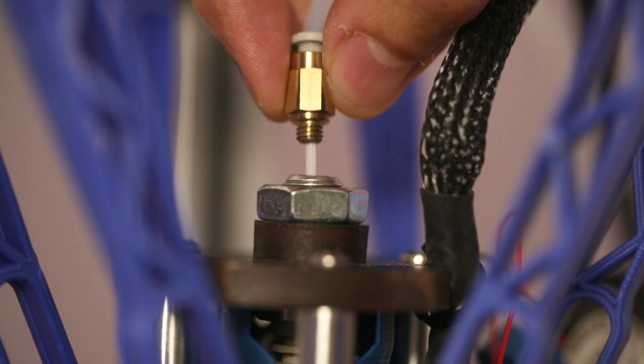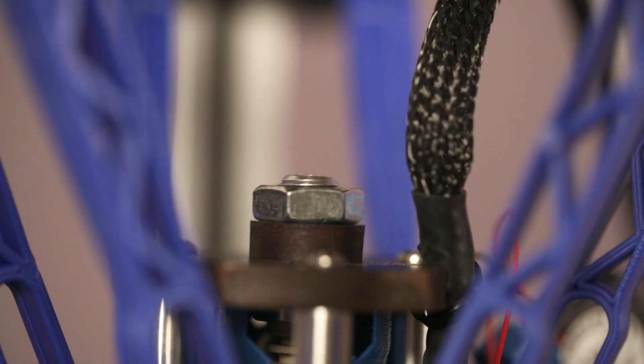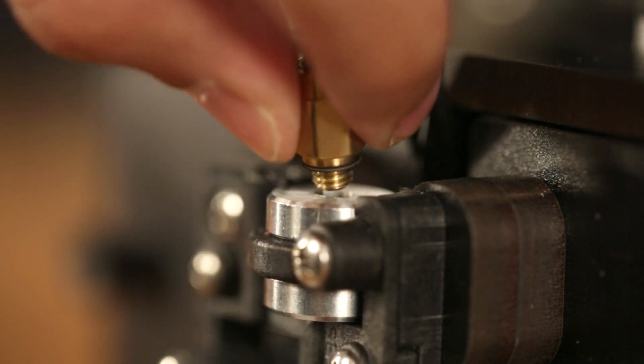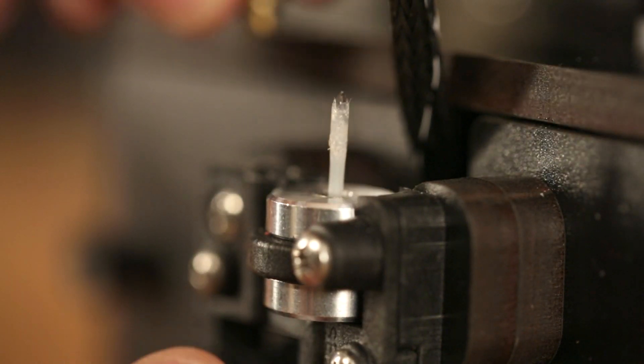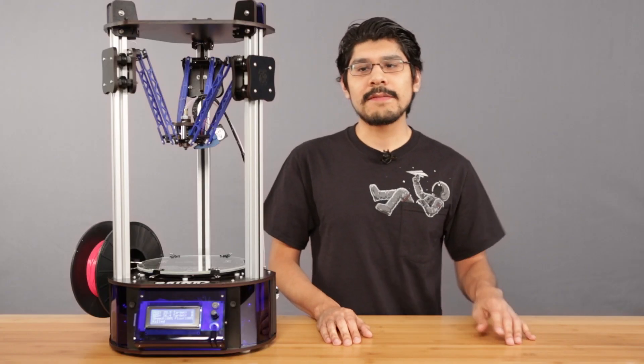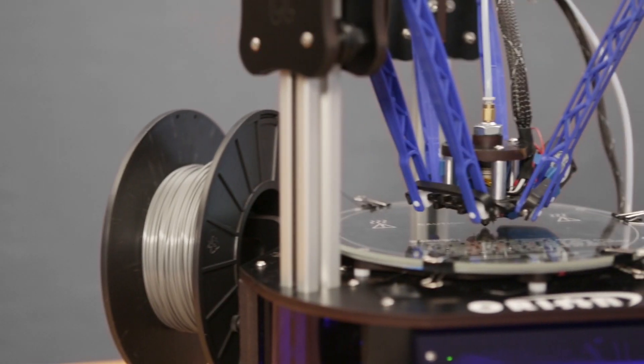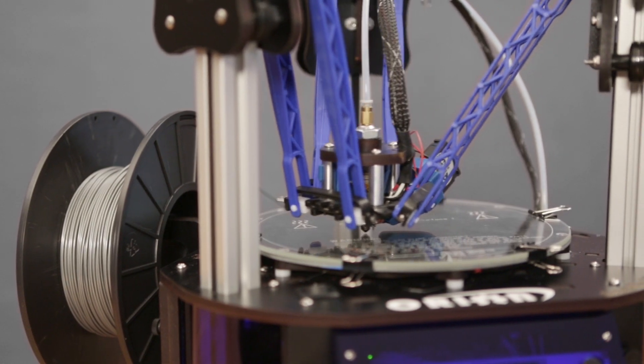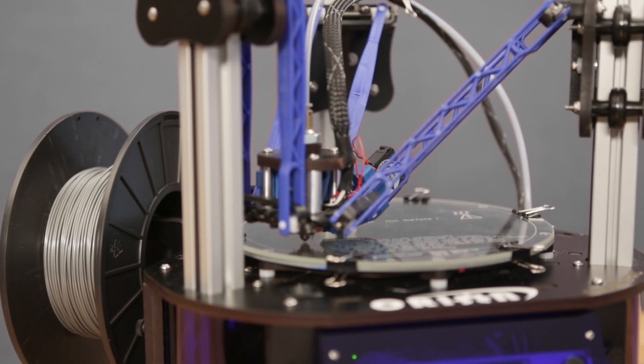Some of the cons though: it is a Bowden drive system so it's not as responsive to retracts like a direct feed printer so you're gonna have some problems with ninja flex but it does print pretty well with flexible nylon. It's a little bit tedious to level the bed in some parts and the open frame means that you might need to build an enclosure if you're gonna print large ABS parts.